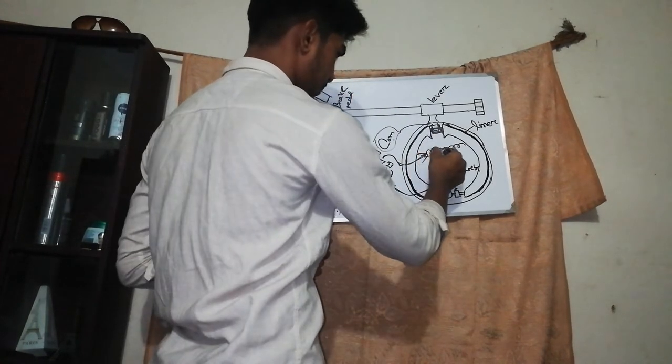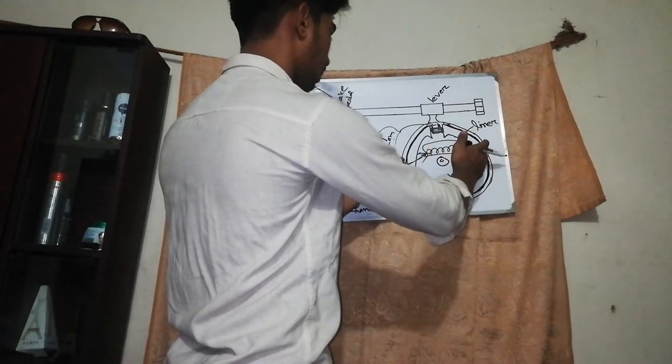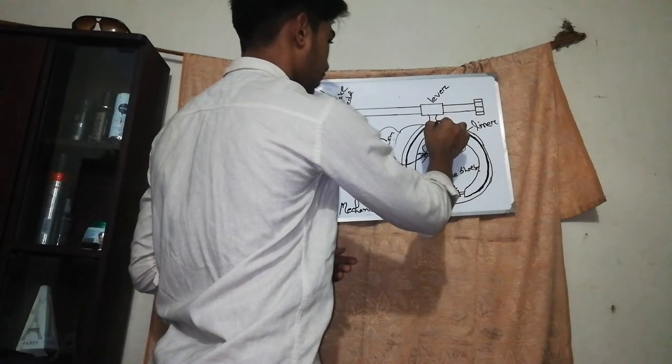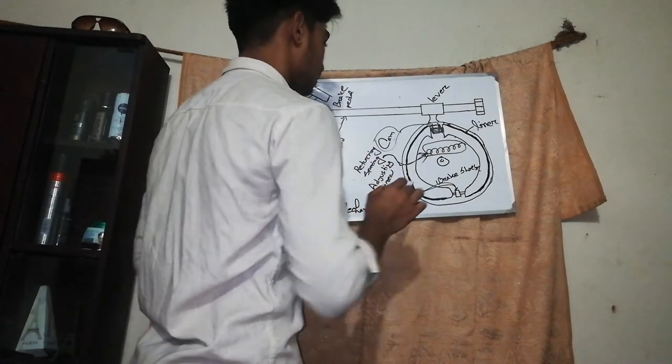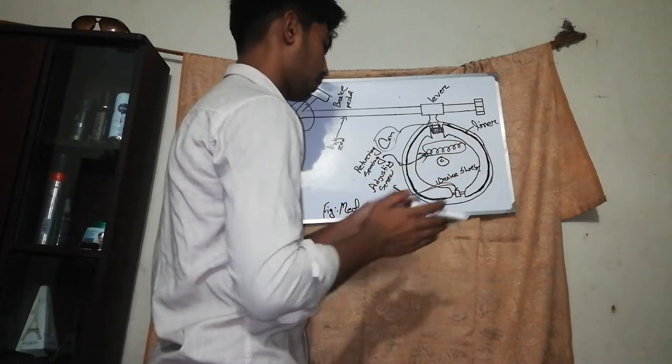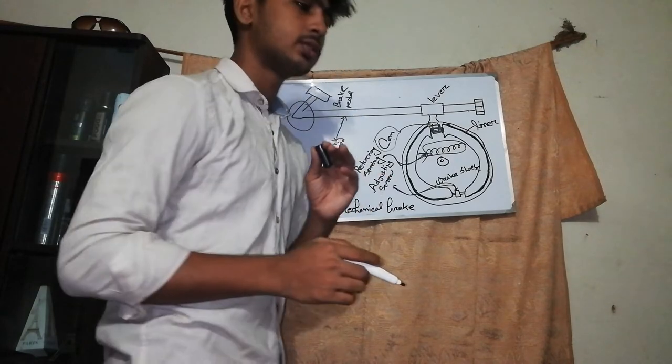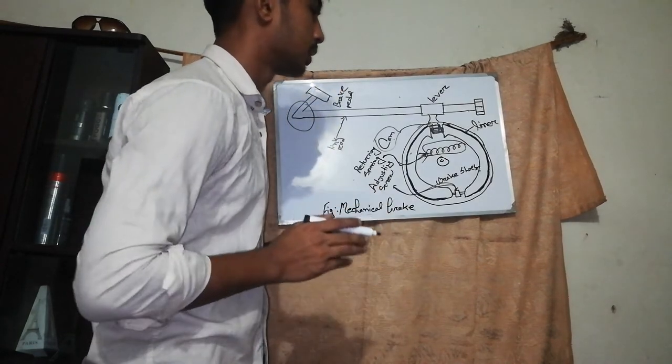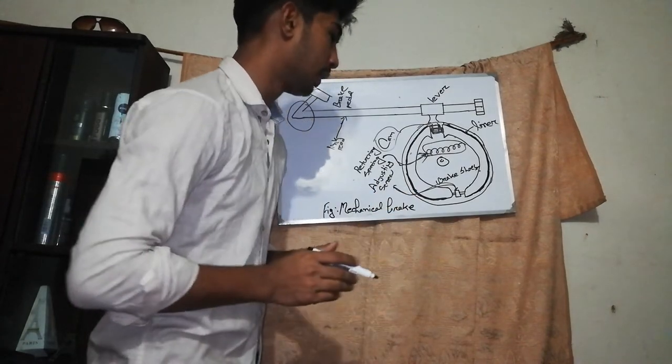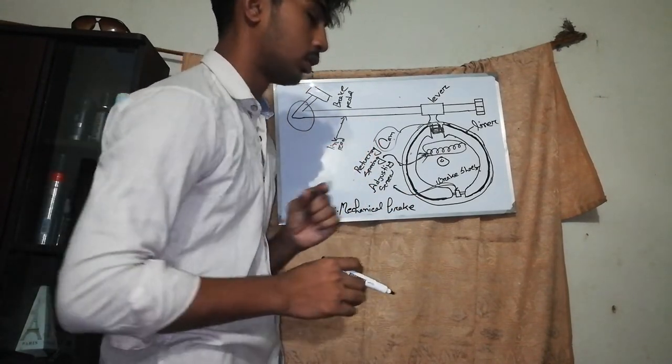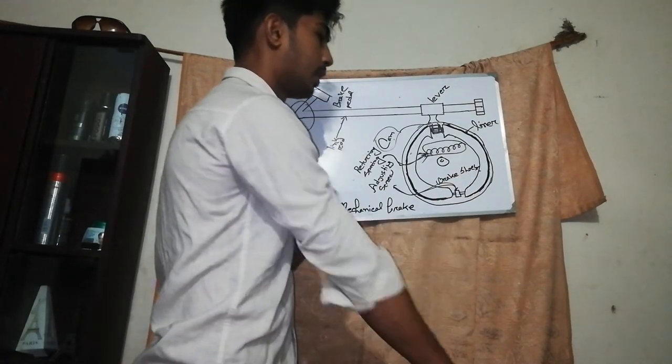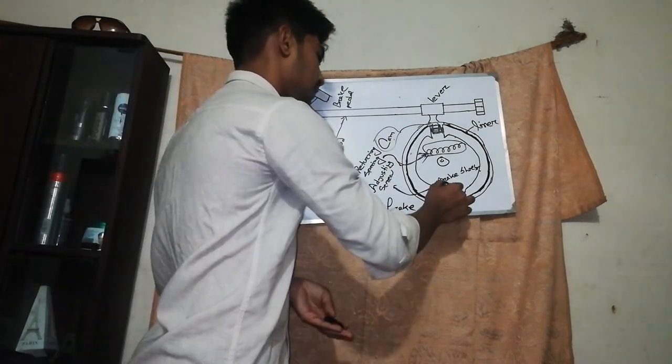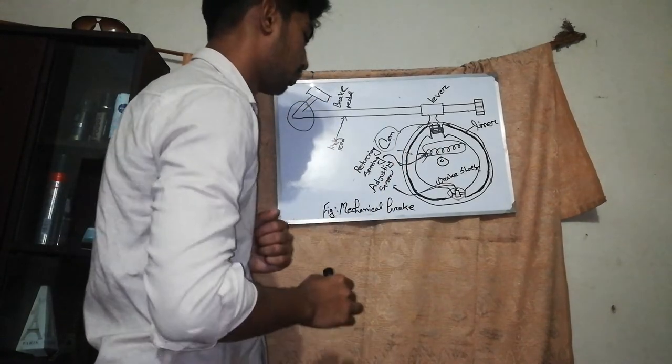This is the retaining spring, and the brake pedal will go to the top. As you can see, there is a lever that will work in this position. The adjusting screw will be adjusted. If you have brake drum or brake shoes, you can adjust the brake drum. So we are adjusting the mechanical brake.